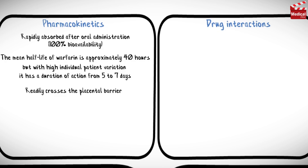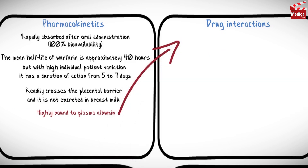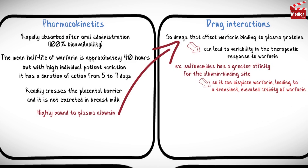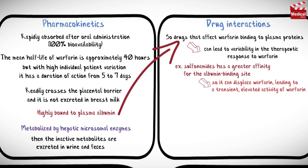Warfarin readily crosses the placental barrier and is not excreted in breast milk. It is highly bound to plasma albumin, so drugs that affect warfarin binding to plasma proteins can lead to variability in the therapeutic response. For example, sulfonamides have a greater affinity for the albumin binding site and can displace warfarin, leading to a transient elevated activity of warfarin. Warfarin is metabolized by liver enzymes, and the inactive metabolites are excreted in urine and feces.